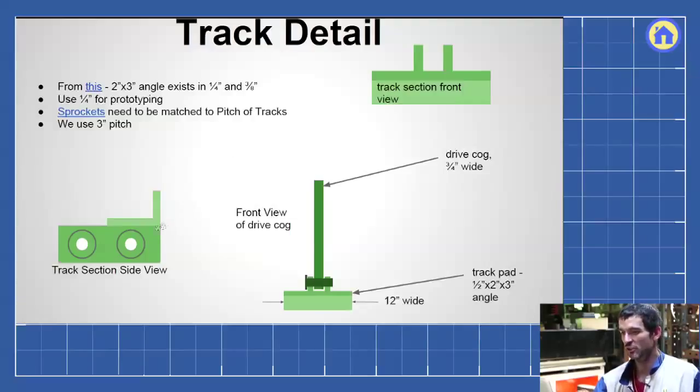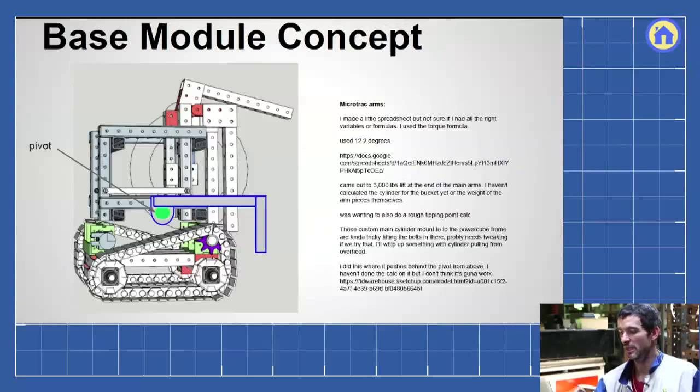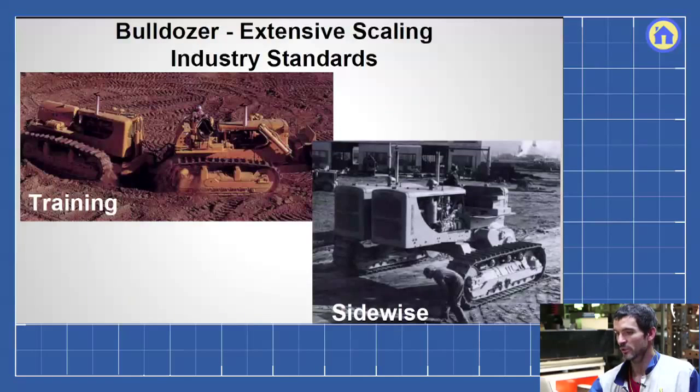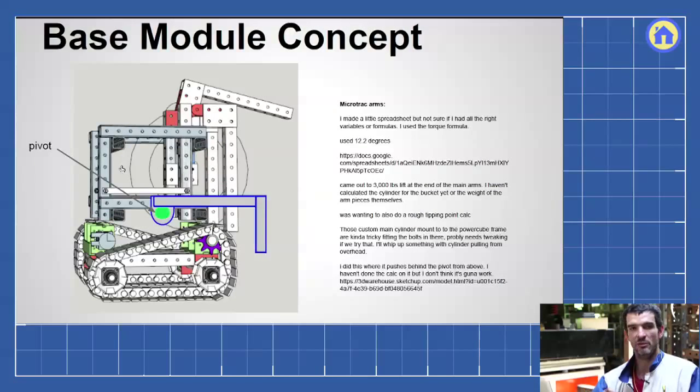So here we go through the track sections, how we are designing them. We're looking at aggressive treads by simply welding on an angle or just a protrusion on the track pads. Here we talk about other considerations, just looking at industry standards for sidewise bulldozer configurations and trailing configurations. Here we're talking about how we do the loader arms.